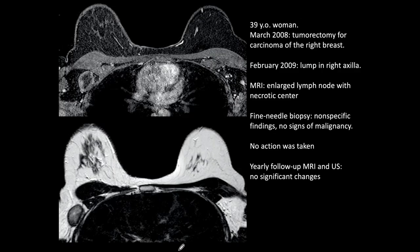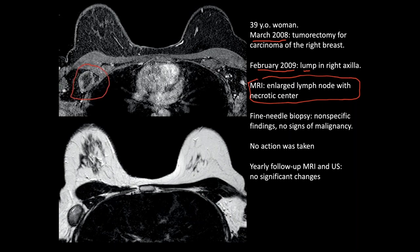To finish, let me show you the last case, which is very interesting — a 39-year-old woman who in March 2008 had a tumorectomy for carcinoma of the right breast. In February 2009, about one year after the intervention, she discovered a lump in the right axilla. An MRI was done and interpreted as an enlarged lymph node with a necrotic center. A fine needle biopsy was performed — the findings were not specific, no sign of malignancy. They decided not to do anything and to keep checking with yearly MRI and ultrasound. MRI and ultrasound didn't change over the years, so everybody was very happy.